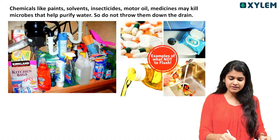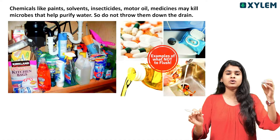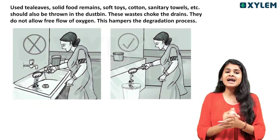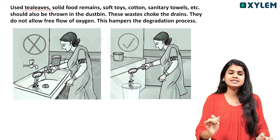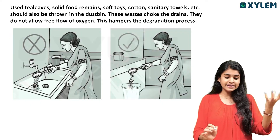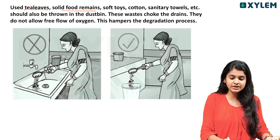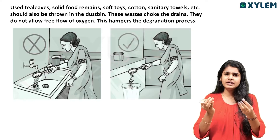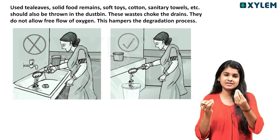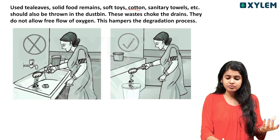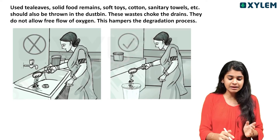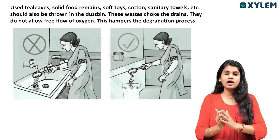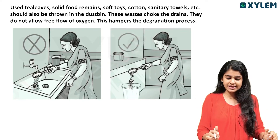When we have to flush the toilet, we have to flush the chemicals. We have to use tea leaves — you can use tea leaves. The food remains, soft toys, cotton, sanitary towels — these are things we have to put in the dustbin. We have to find the dustbin.